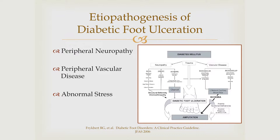Here are the three major things that lead to diabetic foot ulcers: neuropathy, PVD, and abnormal stress. Sometimes ulcers are more skewed towards a neuropathic origin, and sometimes they're almost purely ischemic, but most of the time they're neuro-ischemic — a combination of the two. In diabetics, derangements in joints and deformities result in increased plantar foot pressures, and the combination of neuropathy and PVD in that setting leads to ulceration.